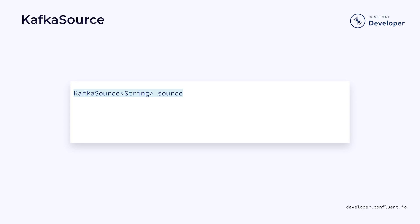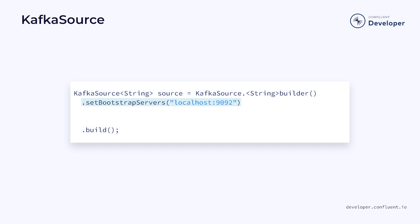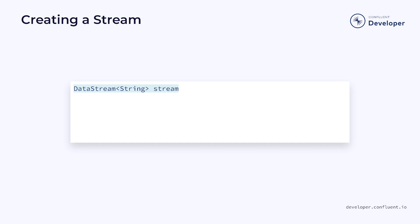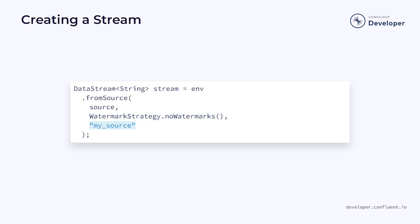One of the most common ways to create a stream is from a Kafka topic. To create a Kafka source, we can leverage the Kafka source builder. This will require us to provide a variety of Kafka properties, such as the bootstrap servers. We can do this using individual setters on the builder, but it's often easier to simply load them from a properties file. We also need to provide the topic or topics that we'll be subscribing to, and we need a deserializer. In this case, we are using a simple string schema for deserialization so that each record will be read as a string. Once we've created our source, the final step is to turn it into a stream using the from source method on our stream execution environment, supplying the source, a watermark strategy such as no watermarks, and a name for the source.